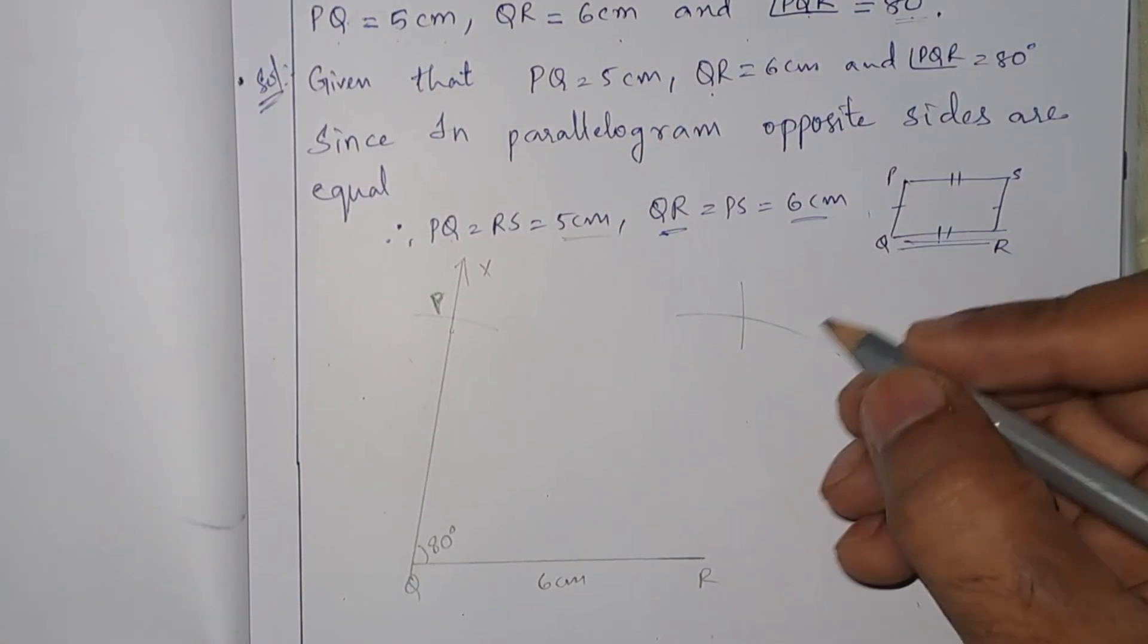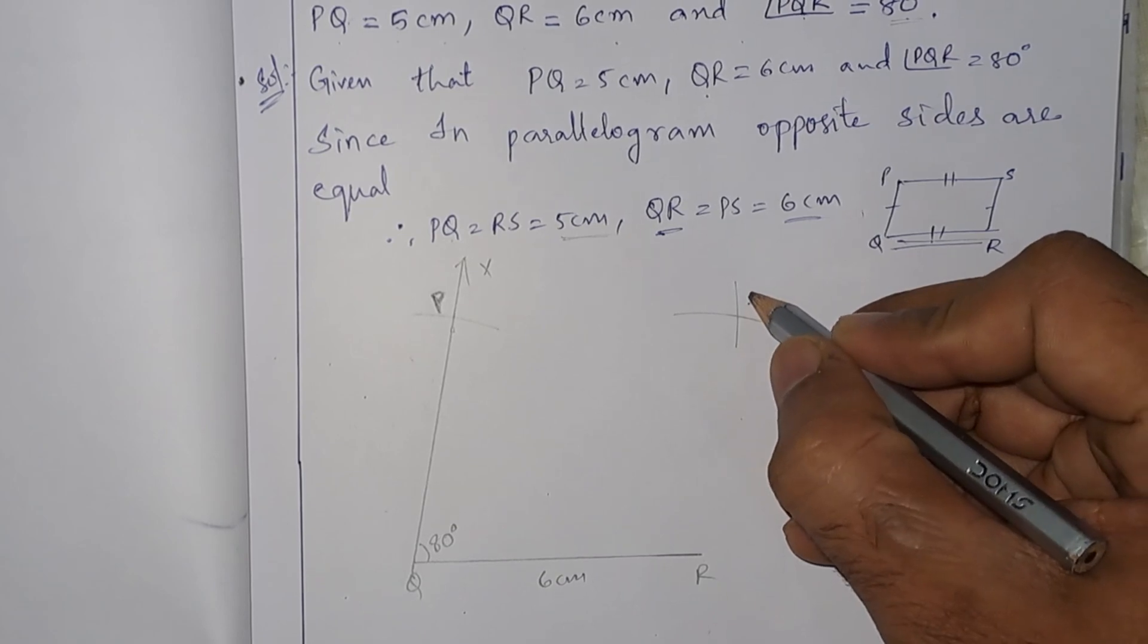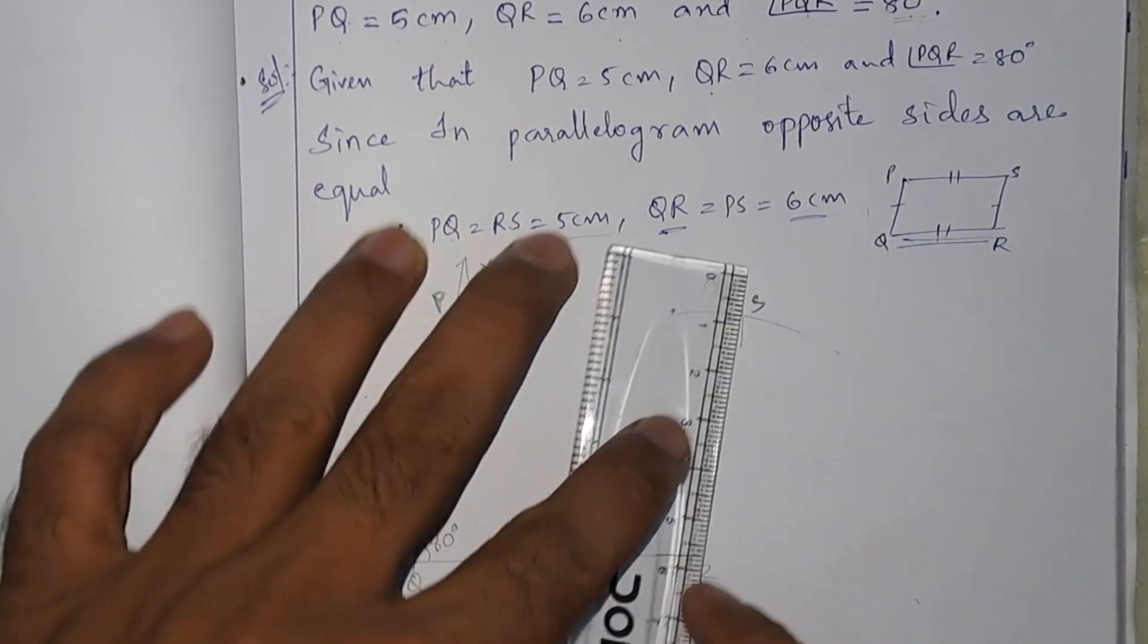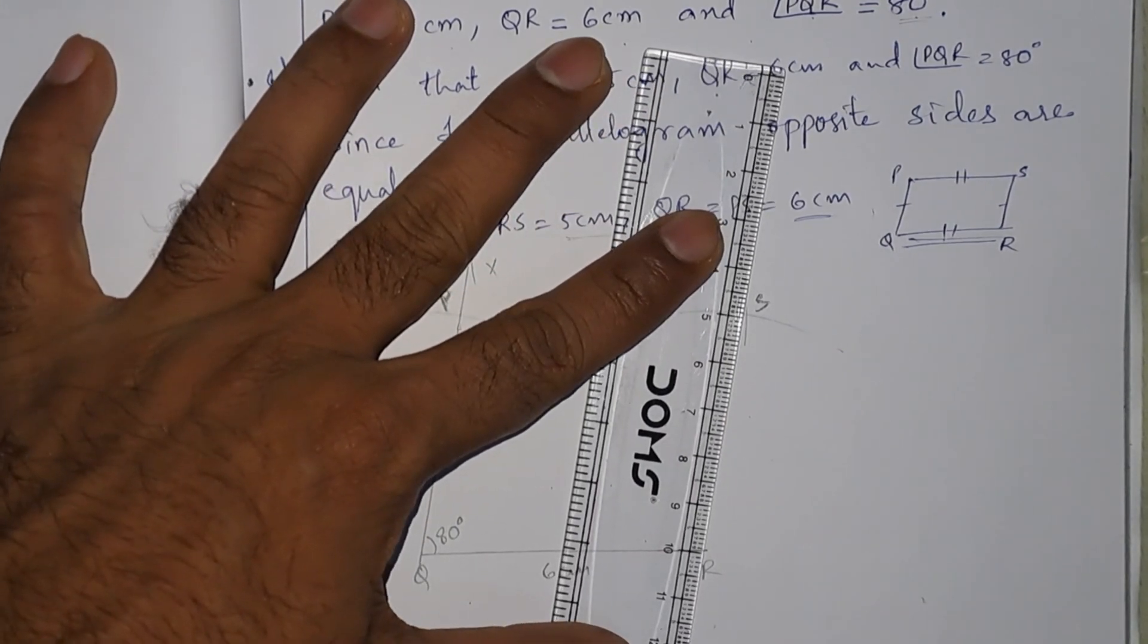The intersection point will be S. Now let us join these points from S to R.